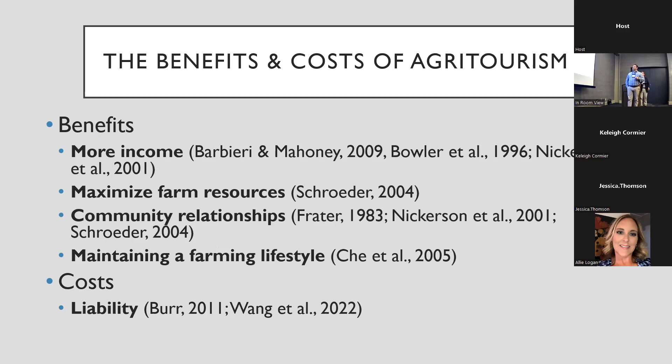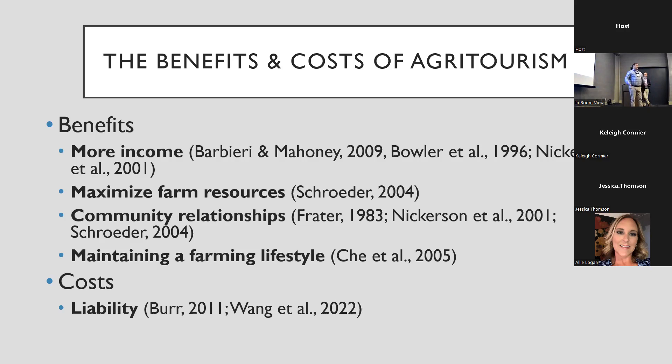One interesting area we found was the idea of community relationship — not just being tenants of the land and working with neighbors, but getting people in Alabama to understand that agritourism opportunities exist right next to them. Whether it's pumpkins, peanuts, or craftships, people didn't think of the place down the road as agritourism even though they go there every day.